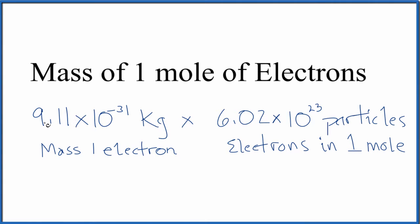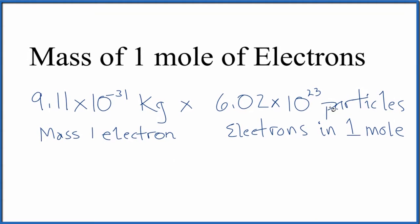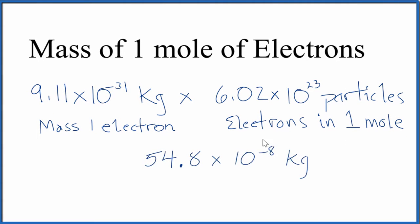To do that, when we multiply, we'll multiply 9.11 times 6.02, and then we add these exponents when multiplying with exponents. We end up with 10 to the negative 8th because negative 31 plus 23 gives us negative 8.